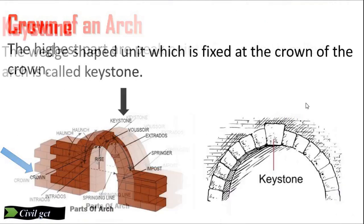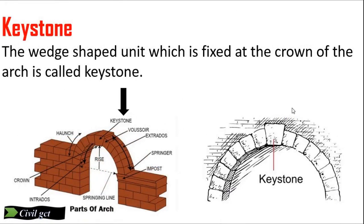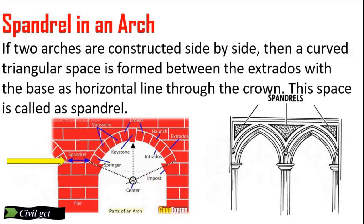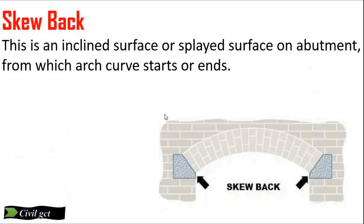Crown of an arch: the highest part or peak point of the extrados is called the crown. Keystone: the wedge-shaped unit which is fixed at the crown of the arch is called the keystone. Spandrel: in an arch, if two arches are constructed side by side, a curved triangular space is formed between the extrados, which has a base as a horizontal line through the crown — this space is called the spandrel.